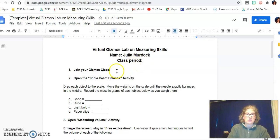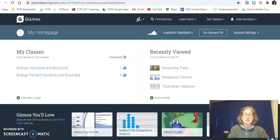Then you would go to your Gizmos class. Hopefully you have already joined Gizmos class. If you have not, you may want to go and look at the other video where I explain how to log in there. Once you've got that and you're logged in, go to the Gizmos home page and open the triple beam balance activity. You should have these three activities that you can see: measuring trees, measuring volume, and triple beam balance activity.